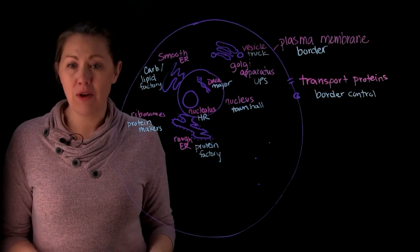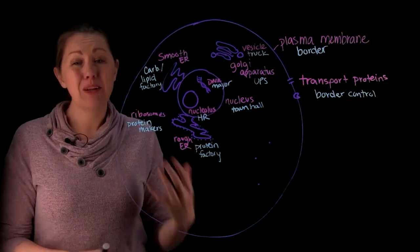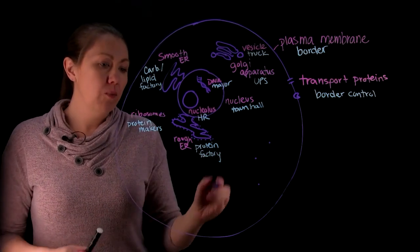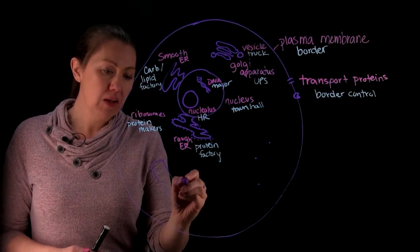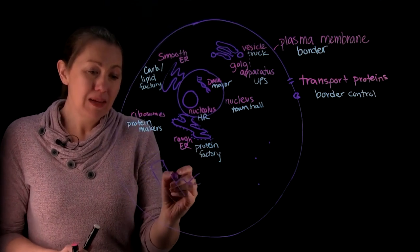Now, if we're going to ship things around, we should also have a means of transportation. We need a road system. And so within our cell, we'll have large ones. I like to think of these like highways. And you'll also have smaller ones and some medium sized roads.